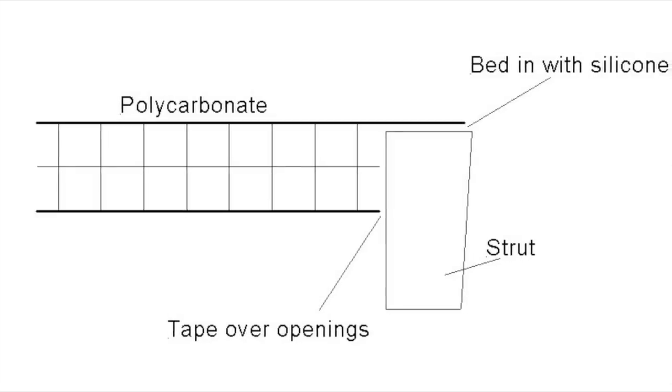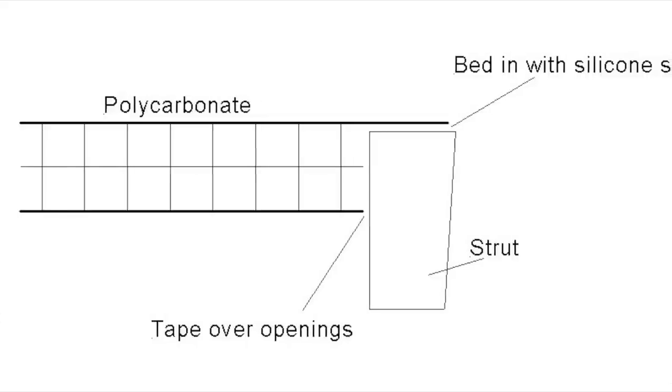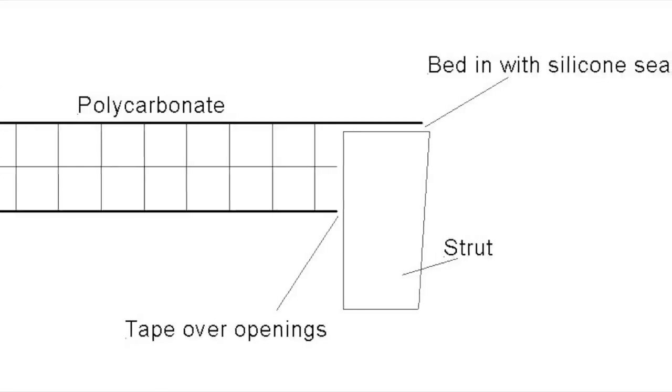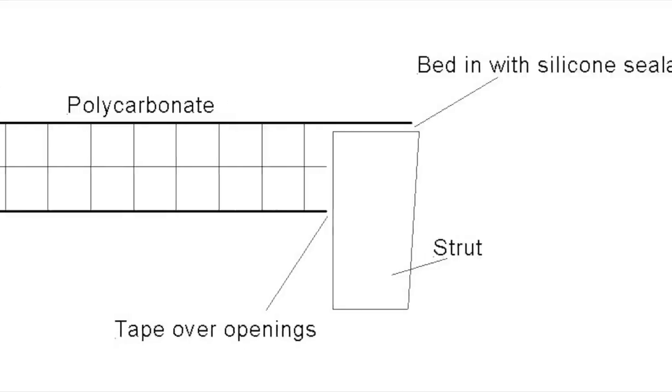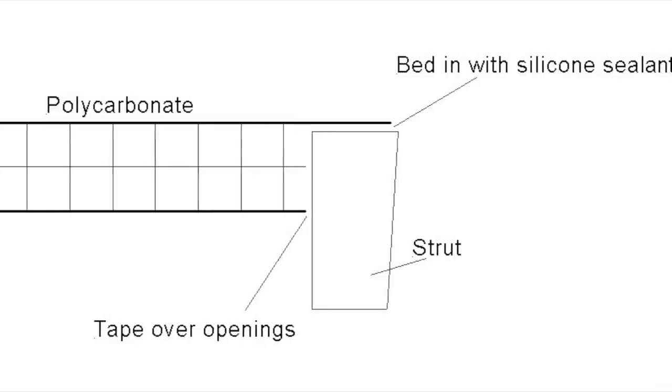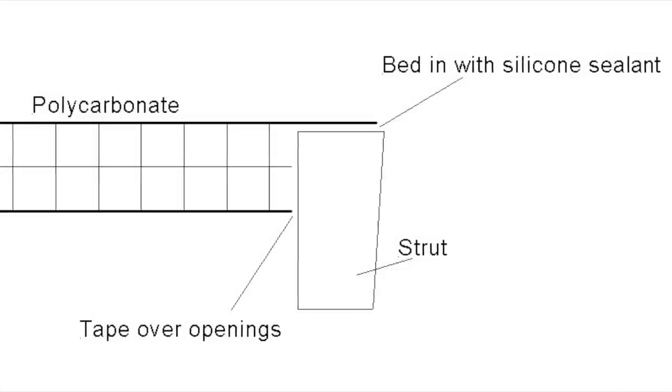Thicker gauge polywall, like you can get three-layer and five-layer - what you do in those circumstances is you cut a rebate out of the polycarbonate and just leave the very top sheet overlapping the frame. And other than that, it's exactly the same - you use glazing tape and silicon.